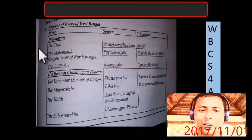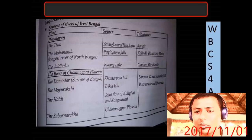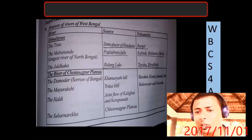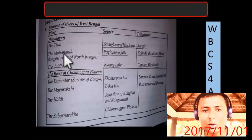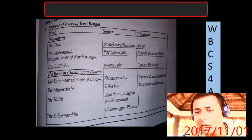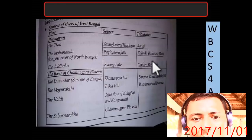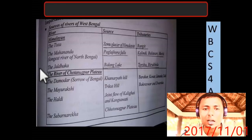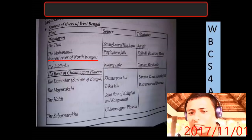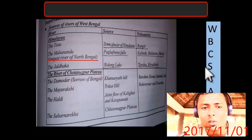Now let's look at the rivers of West Bengal. The Teesta originates from the Zemu Glacier, with Rangit as a tributary. The Mahananda originates near Pagla Jhora Falls. Kali Nadi, Mechi, and Balason are tributaries of Ganga. Mahananda is the largest river of North Bengal. Jaldhaka originates from Bidang Lake. Tursa and Viral Khol are also tributaries.